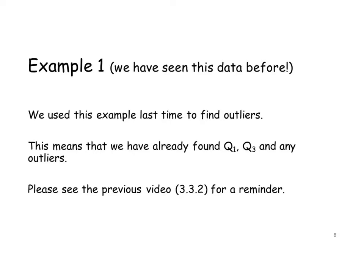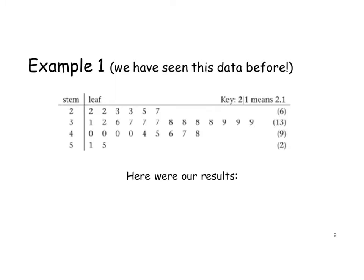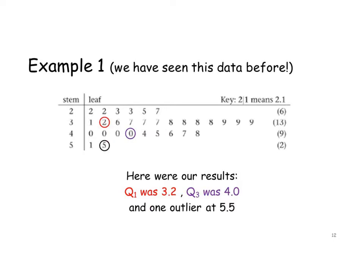We've already found Q1 and Q3 and the outliers in our last video, and we will use those results today. Please review the last video if you need a reminder on how to find these. The values were: Q1 was 3.2, Q3 was 4.0, and we had one outlier at 5.5.